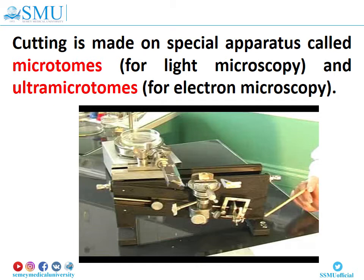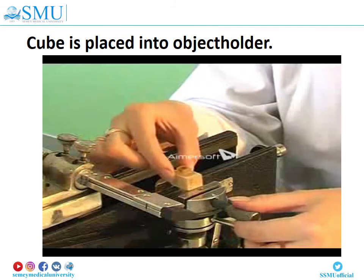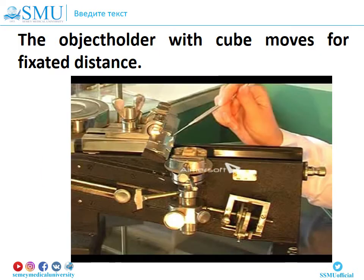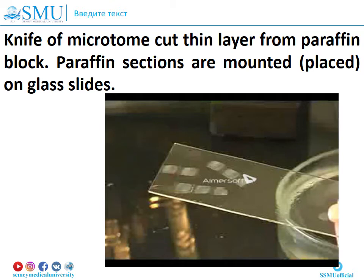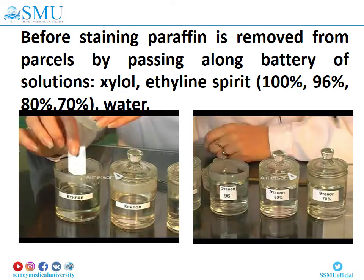In electron microscopy, this apparatus is called the ultra-microtome. The cube is placed into the object holder of the microtome. The object holder with cube moves a fixed distance. The knife of the microtome cuts a thin layer from the paraffin block. Paraffin sections are mounted on glass slides. Before staining, paraffin is removed from the sections by passing through a battery of solutions: xylol, ethanol from 100% to 70%, and water.